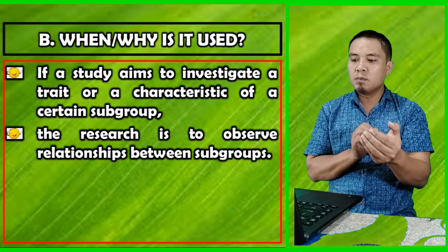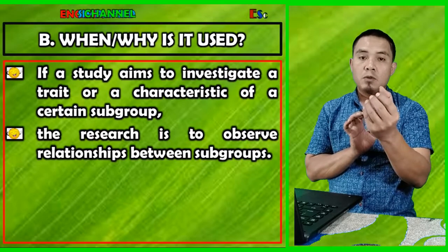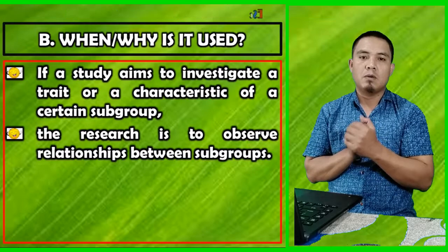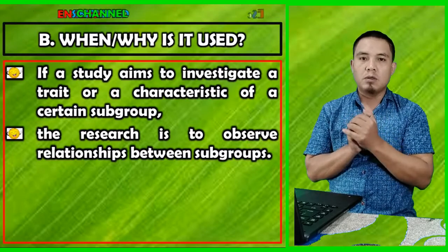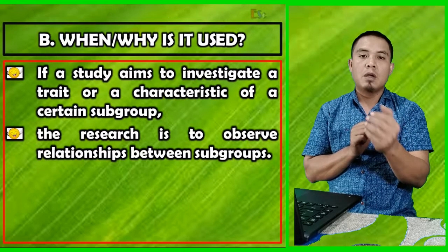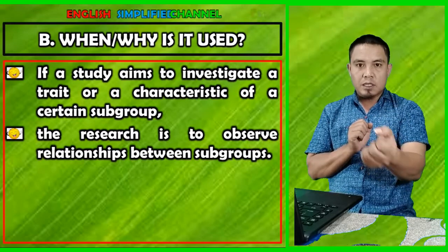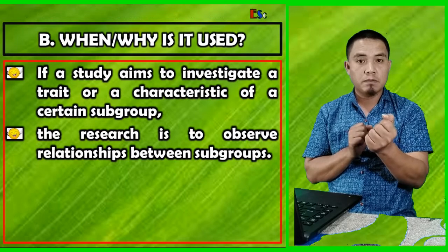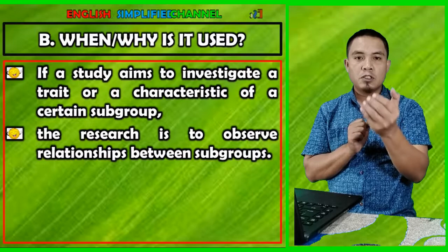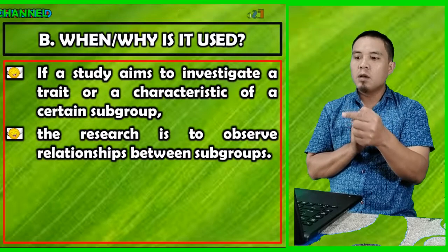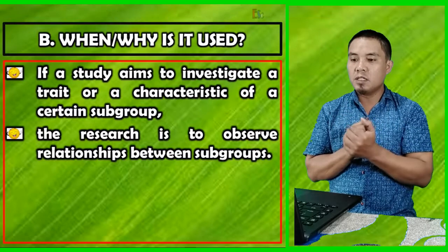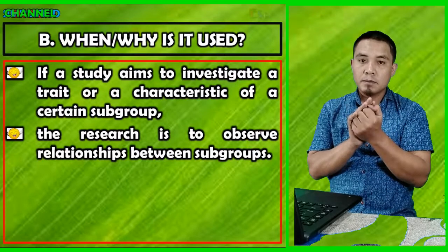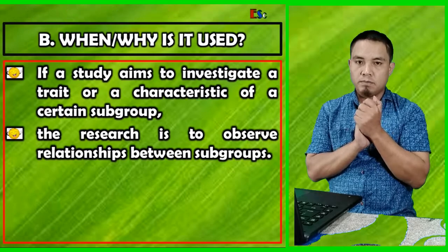Quota sampling is also used when your research aims to observe the relationships between subgroups — for example, when you want to compare data from the first grade to the second or third grade. Once again, quota sampling is non-probability sampling. The reasons a researcher chooses quota sampling are: to investigate a trait or characteristic of a certain subgroup, or to compare data collected from different groups.